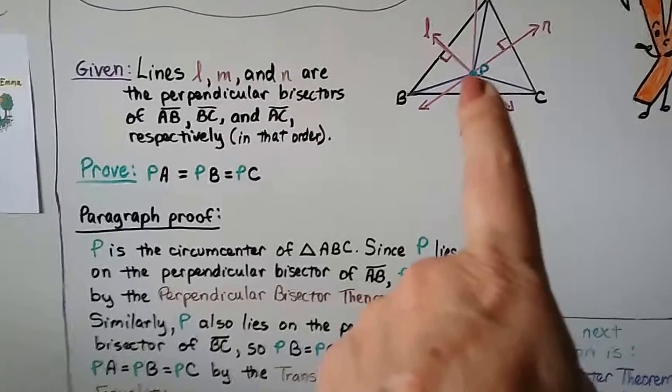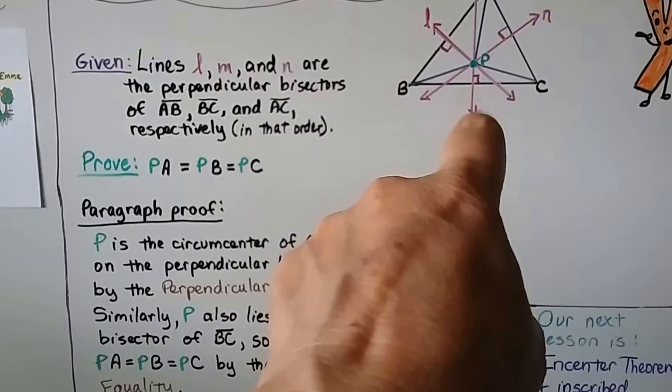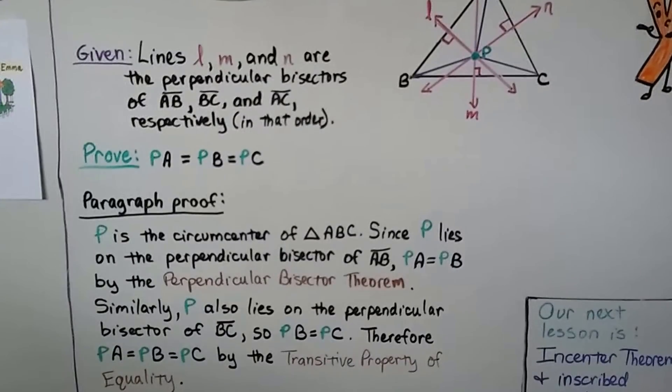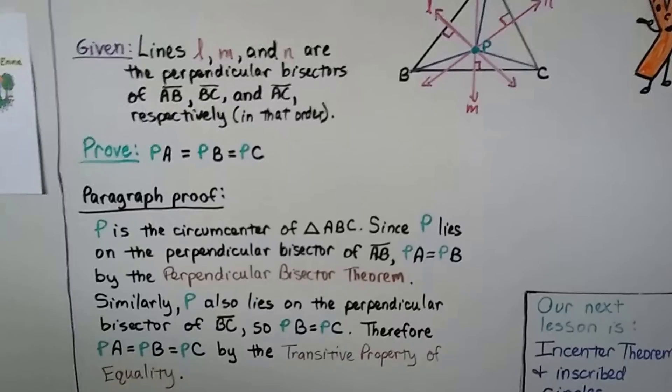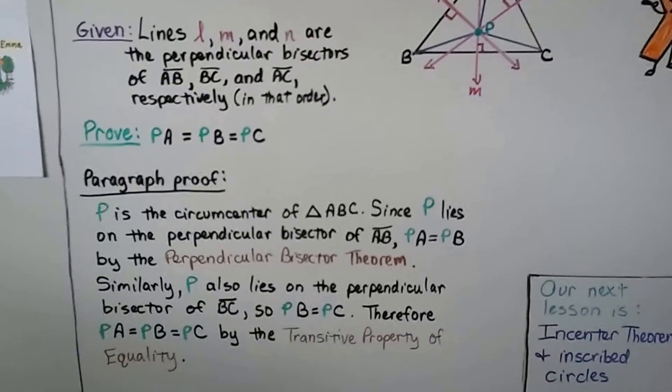And similarly, P also lies on the perpendicular bisector of BC, right here. So PB equals PC. Therefore, PA equals PB equals PC by the transitive property of equality.